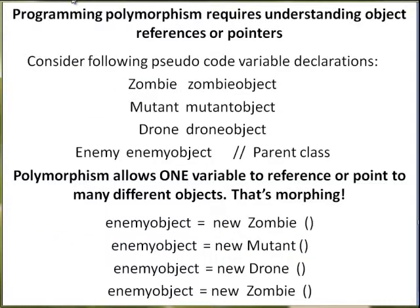Programming polymorphism requires understanding object references, pointers, or object variables. Consider the following pseudocode variable declarations. I'm going to create a zombie object of type zombie, a mutant object of type mutant, a drone object of type drone, and an enemy object of the parent class enemy. Polymorphism allows this one variable, enemy object, to reference or point to many different types of objects — that's the morphing. I don't have to create a different variable for every object; I can use the same variable over and over again.